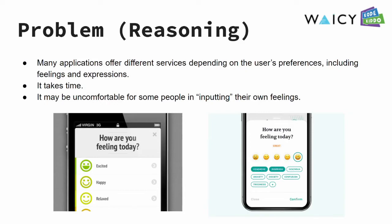We'll start with the problems, which is also the basic reason for this idea. Many applications offer different services depending on the user's preferences, including feelings and expressions. The first problem is it takes time. For example, there is an application that allows you to listen to thousands of songs, and a developer wants to create a feature that gives song recommendations according to the user's current feeling, such as happy, sad, and so on. Wouldn't it be annoying for users if they are asked the same question every time they open the app — "how are you feeling today?" Another reason is that not everyone is comfortable expressing their feelings, resulting in less accurate detection.